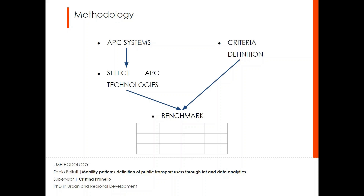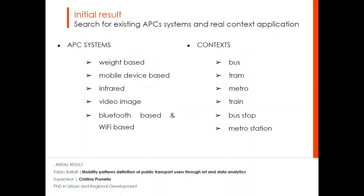To identify the criteria, it is necessary to consider the background of the transport sector. In addition, the criteria are identified on the basis of the data made available by the service provider. As an initial result, many APC technologies have been identified — for example, weight-based APC systems, mobile-device APC systems, infrared, video image, Bluetooth-based and Wi-Fi-based systems. It also exists in many application contexts, for example bus, tram, metro, train, bus stop, and metro station. It is possible to investigate if there are APC systems that perform better for a specific context.